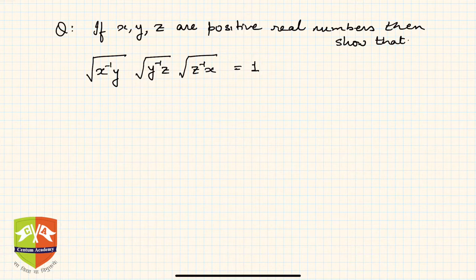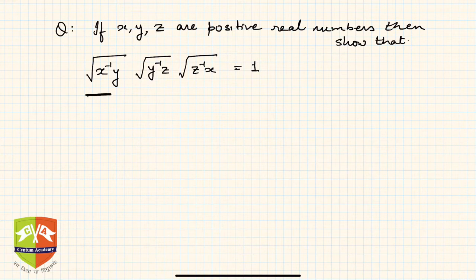So let us take up another question. In this question, it is said x, y, z are positive real numbers, then show that this expression has to be proven to be equal to 1. Now how to go about it? Let us take the LHS first.